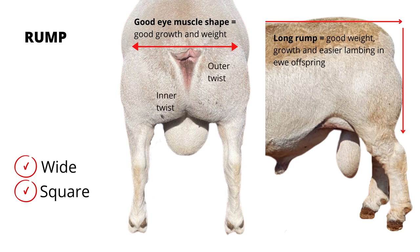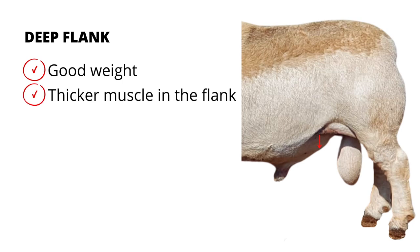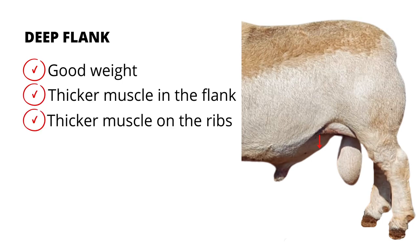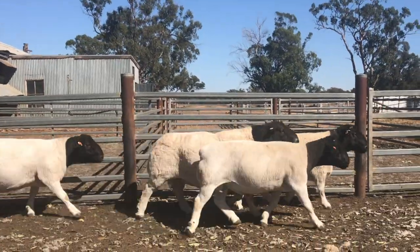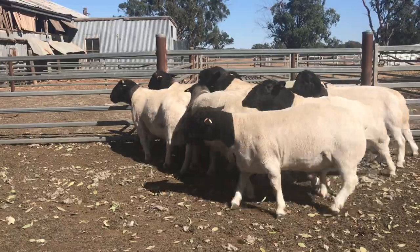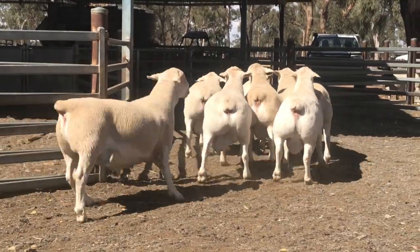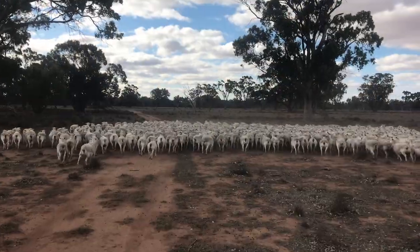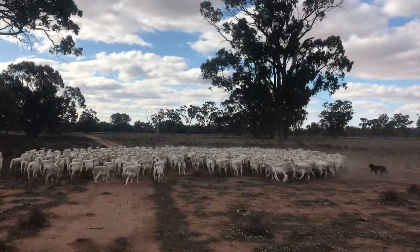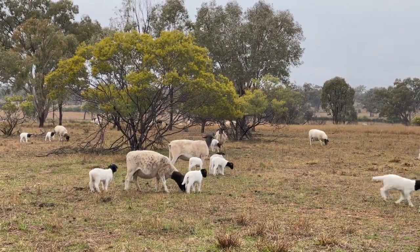Well developed outer twist and inner twist of the muscles on the hind leg are also desirable. And then we want a deep flank. A deep flank is directly correlated to good weight, thicker muscle in the flank, thicker muscle on the ribs and better body fat. Body fat plays a very important role in the drier areas, and it plays a very important role in hardiness, adaptability, and everything the Dorper stands for. Sheep with a lot of body fat can go a longer way — they have the ability to grow up their lambs better, including twins. They are just good doing sheep. Body fat is very important.